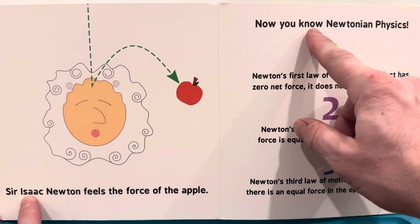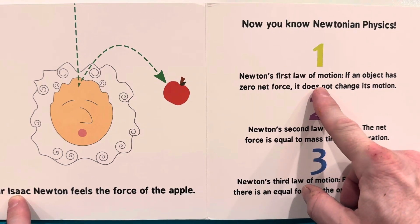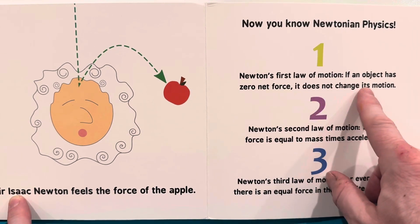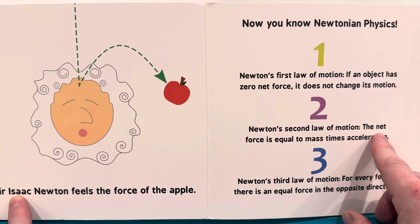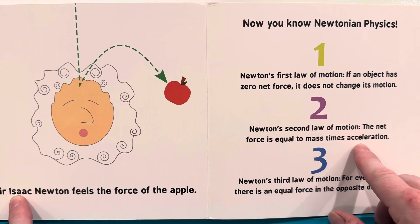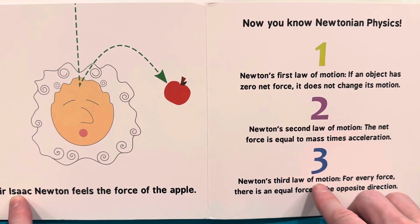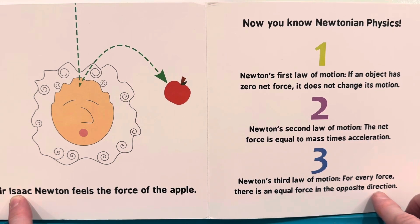Now you know Newtonian physics. One. Newton's first law of motion: If an object has zero net force, it does not change its motion. Two. Newton's second law of motion: The net force is equal to mass times acceleration. Three. Newton's third law of motion: For every force, there is an equal force in the opposite direction.